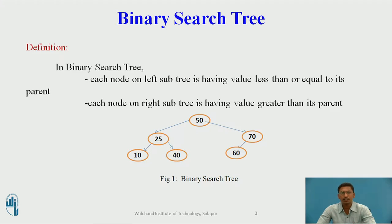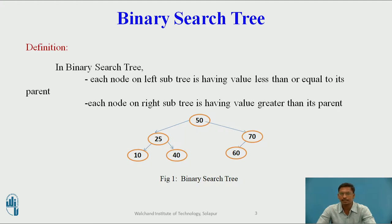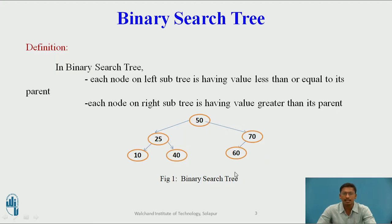Before going to actual construction of binary search tree, we will revise what a binary search tree is. In a binary search tree, each node on the left subtree has a value less than or equal to its parent, and each node on the right subtree has a value greater than its parent. For example, with root node 50, all nodes in its left subtree are less than or equal to 50, and all nodes in its right subtree are greater than 50.